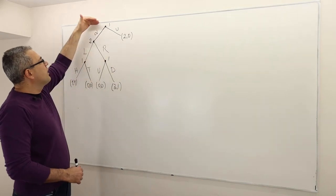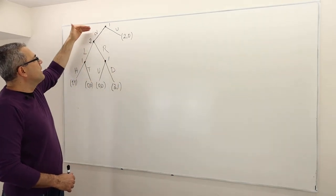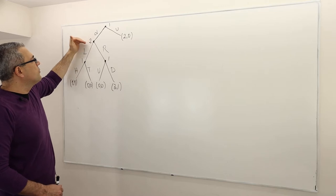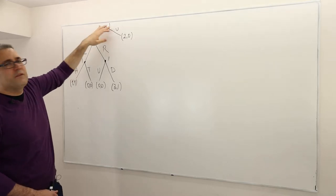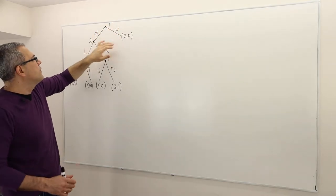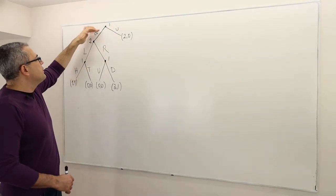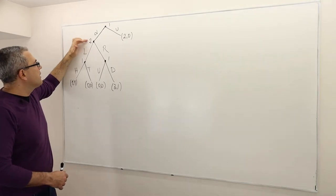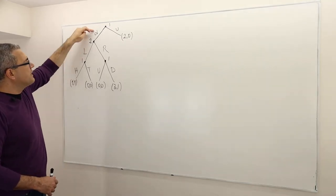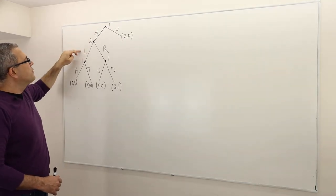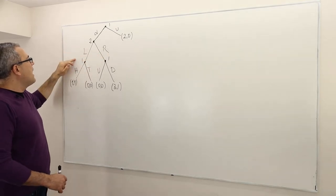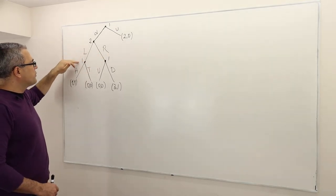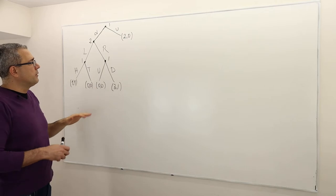This is a two-person game. Player one first moves and chooses D or U, then player two observes D. If player one chooses U the game is over, but if he chooses D the game moves to the second player. The second player observes D and then chooses left or right, and after the second player's choice everything is perfectly observable.